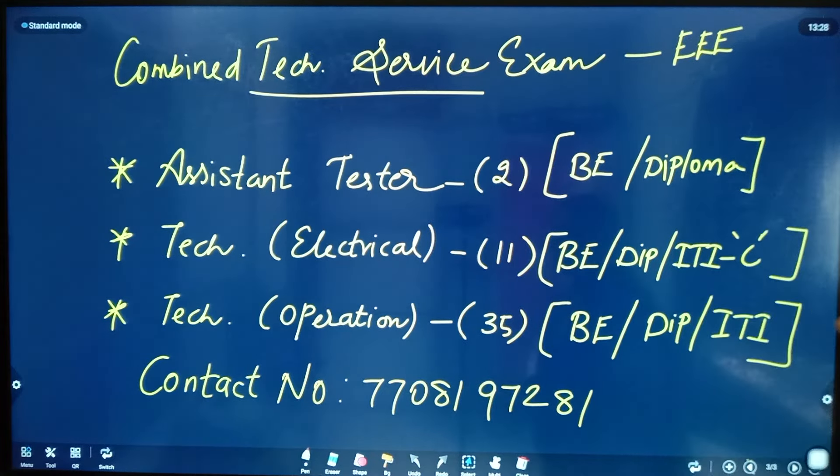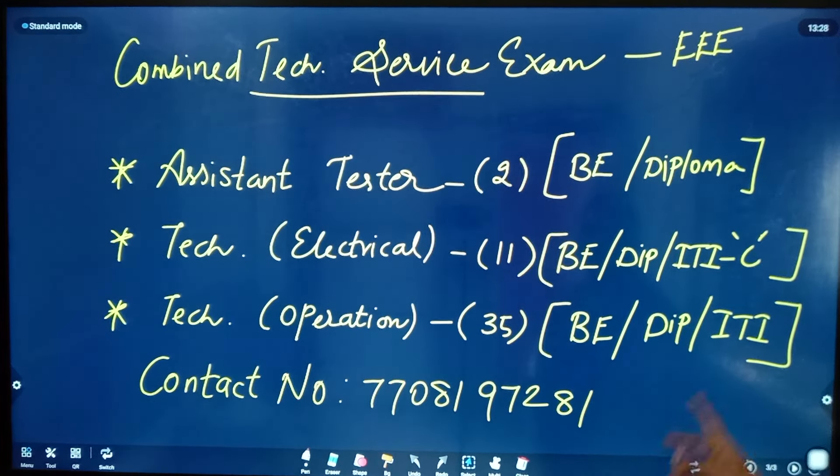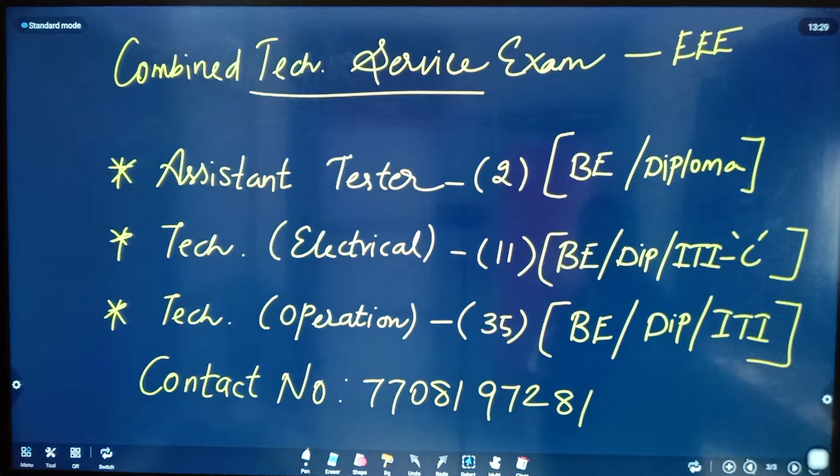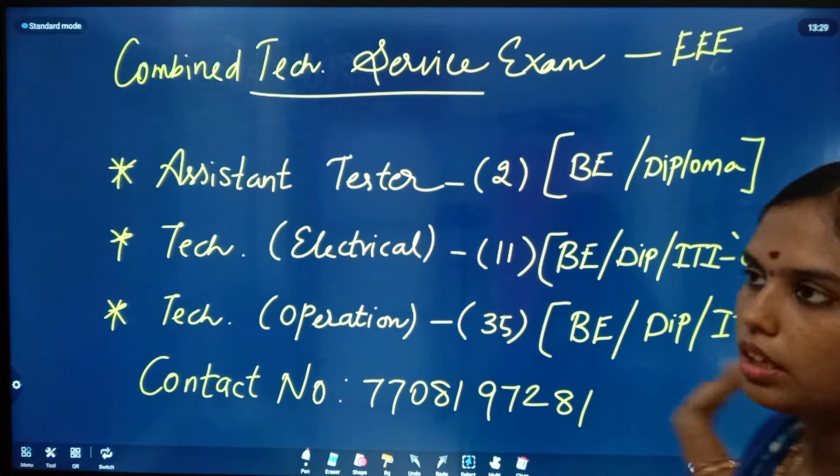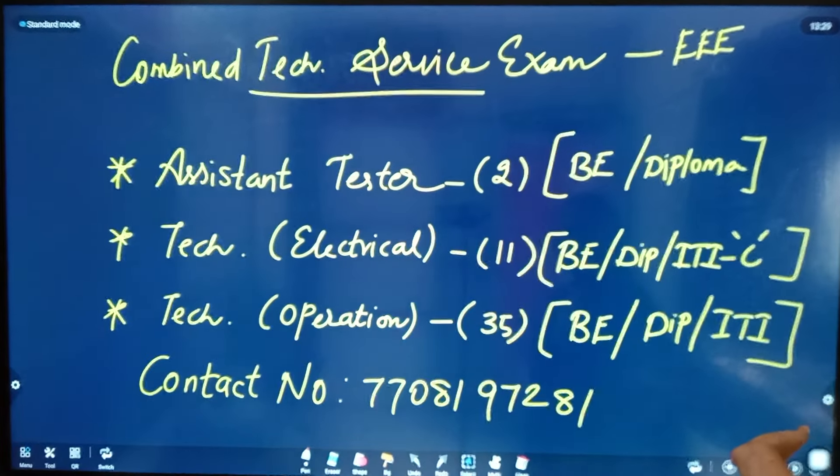For Technical Operation, there are 35 vacancies. The qualifications are BE, Diploma, or ITI. So there are certain vacancies here with these qualifications.